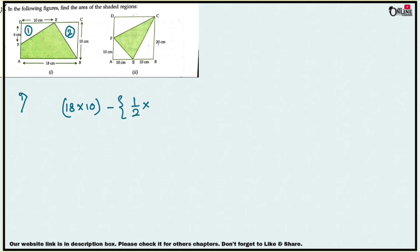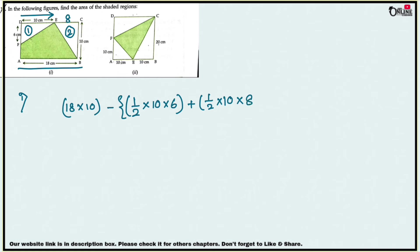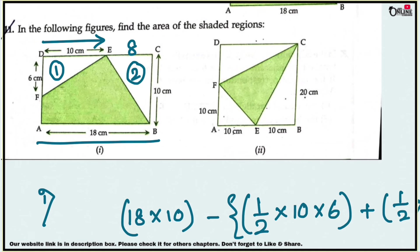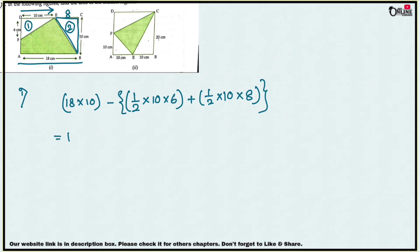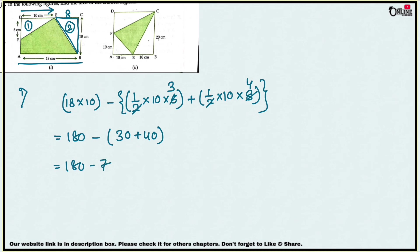For triangle number one: half times base times height. For the triangle BEC: since AB equals 18 and DE equals 10, EC equals 8 centimeters. So area of triangle BEC is half times 8 times 10. The total subtracted area is 30 plus 40 equals 70, giving 180 minus 70 equals 110 centimeter square.